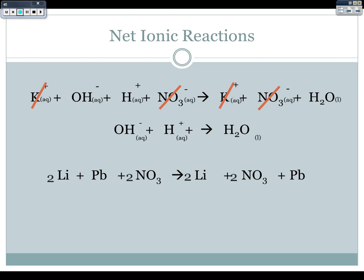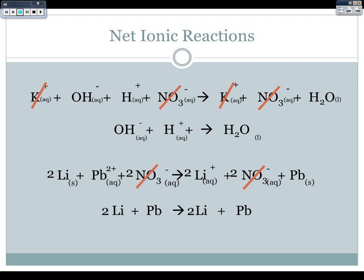For single displacement reactions, we need to balance and add charges first. The only thing that doesn't undergo change is the two nitrate ions, which appear on both sides — so we remove those. The net ionic equation becomes: 2 Li solid + Pb2+ aqueous → 2 Li+ aqueous + Pb solid. We need to indicate what has changed by keeping our balancing and indicating that lithium goes from solid to aqueous and lead goes from aqueous to solid — with phase labels and charges included.